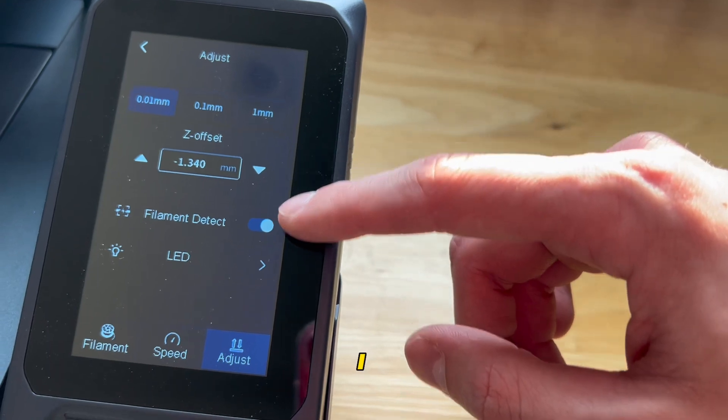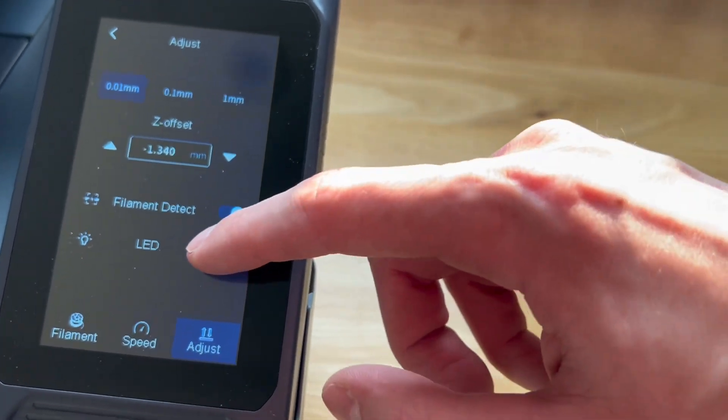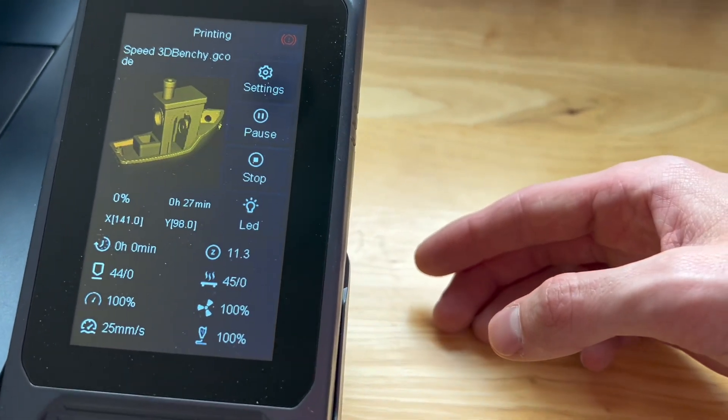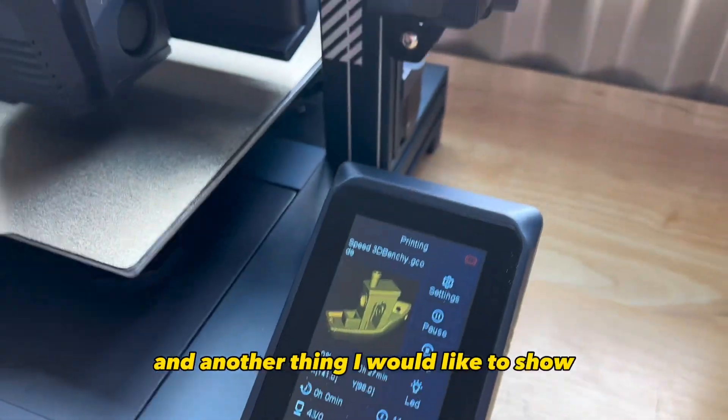And the Z offset, this is very nice. I like to change it while I'm printing. I like to have it a little bit lower on my initial layer and then change it if I'm there.